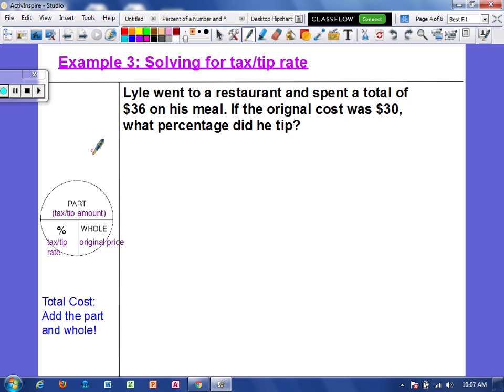Example three. Now we are going to actually solve for the tax or tip rate. So that means that the percent will be missing. Lyle went to a restaurant and spent a total of $36 on his meal. If the original cost was $30, what percentage did he tip? So let's figure out what they have given us in this situation. It says that he spent a total of $36, and that's after the tip. The original cost was $30. So since that's the original cost, that is the whole. Because remember, the total actually comes from the part and the whole combined. So the original cost is your whole, $30.